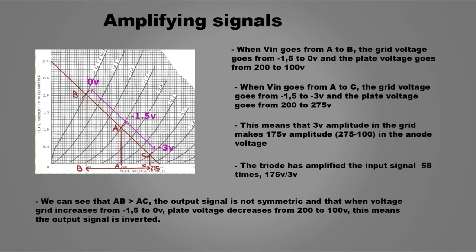In the same way, if we stay in point A and the bias voltage decreases another 1.5V reaching 3V negative, the plate voltage increases to 275V.